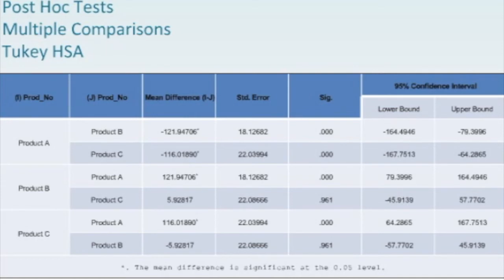First against product B, we can see that the mean difference is negative 121.95 essentially. We get the standard error of this mean difference, and we can see that it's statistically significant. We get the lower bound and the upper bound of the confidence interval of the difference, and we can see that the value of zero is not included, which means that we have a statistically significant result, which is reflected back in the SIG value. And then comparing product A to product C, we can see we have something similar.